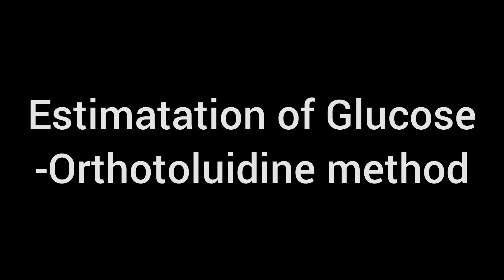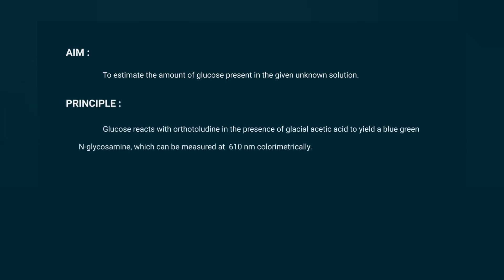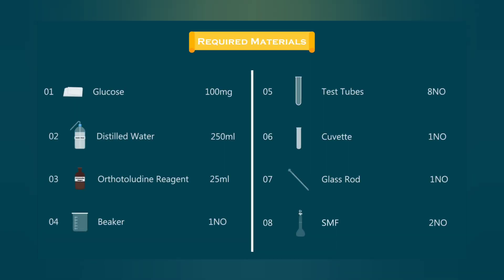In this video, we are looking at the estimation of glucose by the orthotolidin method. Glucose reacts with a solution of orthotolidin in glacial acetic acid. The orthotolidin treated with glucose produces a blue-coloured product. The absorption maxima is 640 nanometers. This is the principle used here.